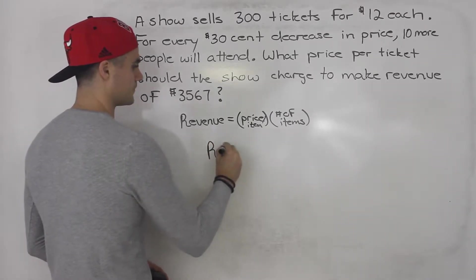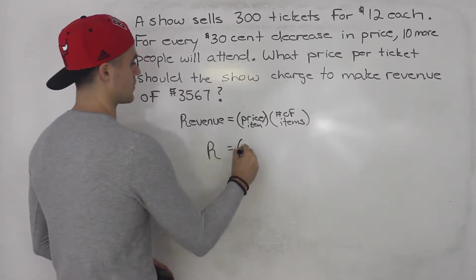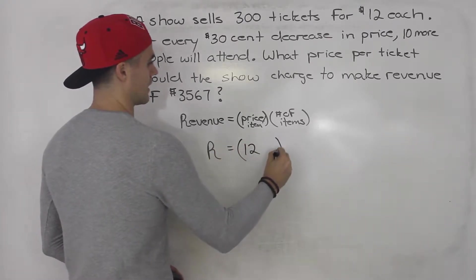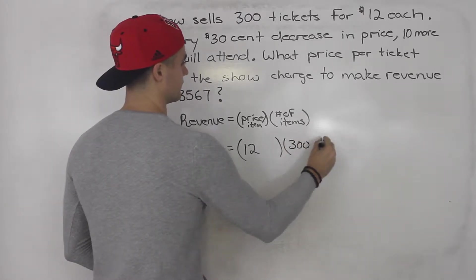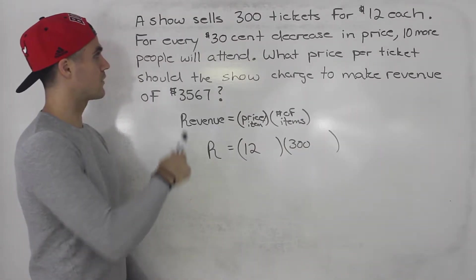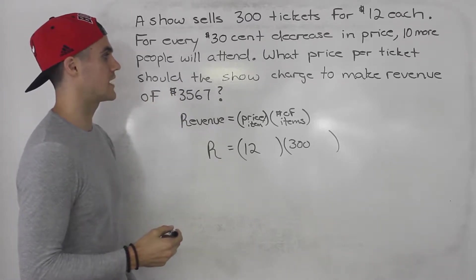So currently, the price per ticket is $12 and the number of tickets being sold is 300. Now we're further told that for every 30 cent decrease in price, 10 more people will attend.